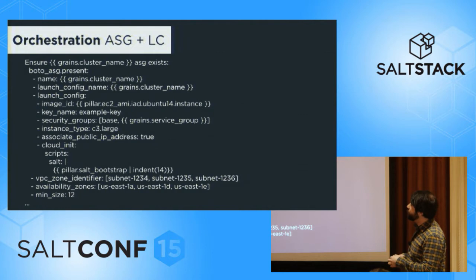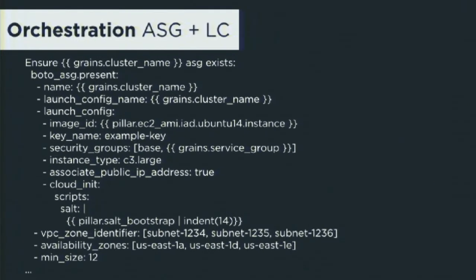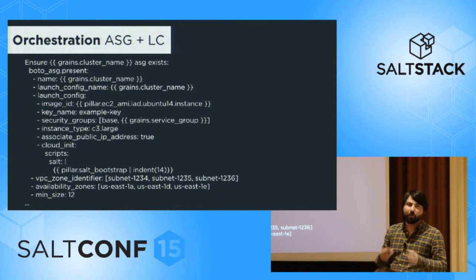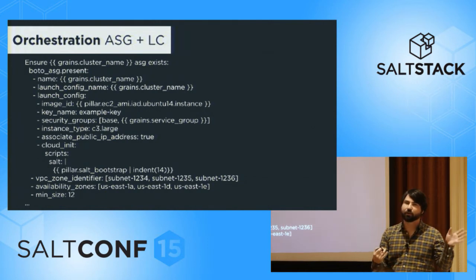Next, we create an autoscaling group and a launch configuration. If you've used autoscaling groups, you've probably dealt with launch configs and know how much of a pain they are. You can only create and destroy launch configurations — Amazon does not give you full CRUD operations for these. So if you want to modify a launch configuration, you have to create a new one, associate it with the autoscaling group, and delete the old one. To avoid this, because that would never work well in a configuration management system, we have the autoscaling group manage its own launch configuration. So if you make any changes to the launch configuration definition, it will automatically create a new launch configuration, associate it with the autoscaling group, and delete the old one. You don't have to worry about managing launch configurations at all.